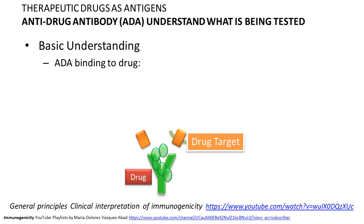Remember that you have a drug. The drug can be an antibody or a protein. This particular drug has a drug target. The drug target can be soluble, as shown on the left, or bound to a membrane, as shown on the right. You have a drug, and you have a natural drug target that is in the human beings that you want to modulate.